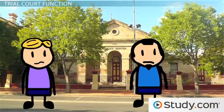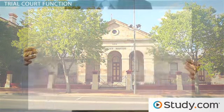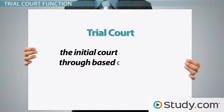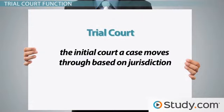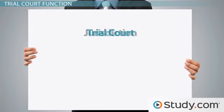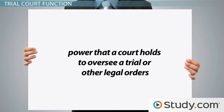When something happens, whether it is a criminal action or a civil disagreement between neighbors, the case is taken to the trial court. The trial court is the initial court a case moves through based on jurisdiction. You've likely heard the term jurisdiction before. In the court system, jurisdiction is the power that a court holds to oversee a trial or other legal orders. It can be based on several things.